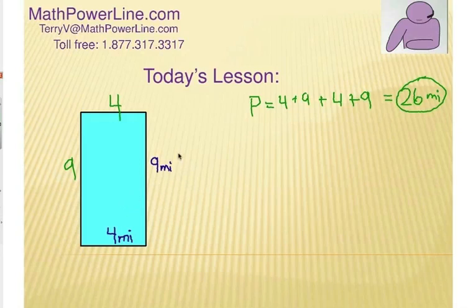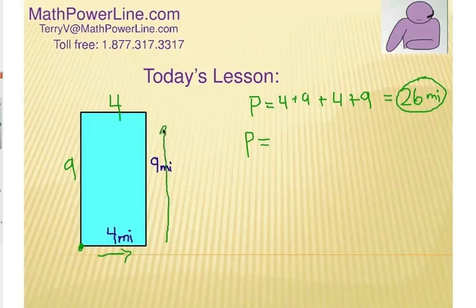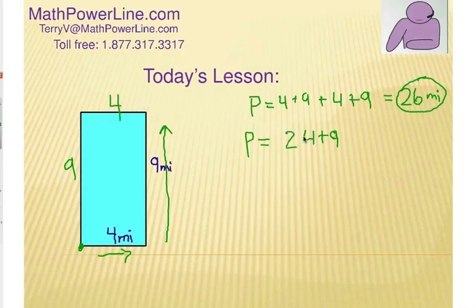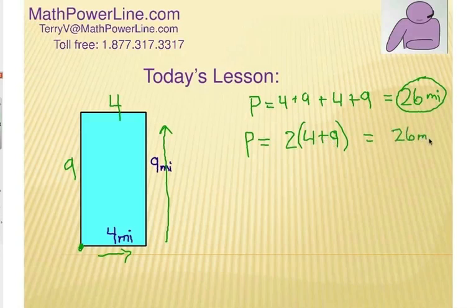Now, notice there are a couple of shortcuts here. Perimeter is the distance walking around the outside. So if I start here and go this direction, I'm going to go four plus nine. Notice how much of the perimeter we've walked — we have gone here and here and we are exactly at the halfway point. Instead of adding four and nine again, let's just double what we have. So one way to think about this is: walk halfway around and then double it. What's four plus nine? That's thirteen. What's two times thirteen? Same answer — twenty-six miles.